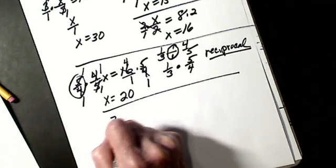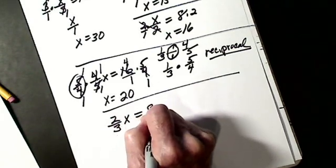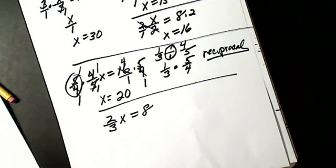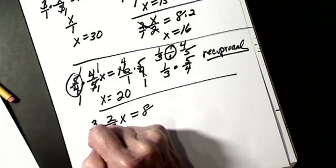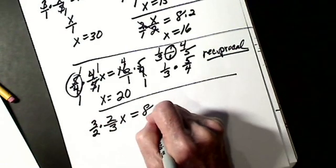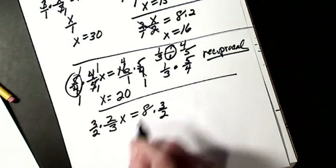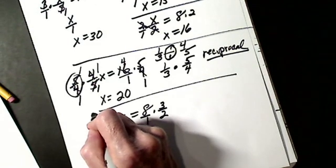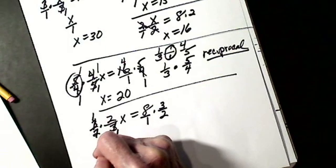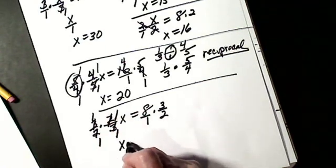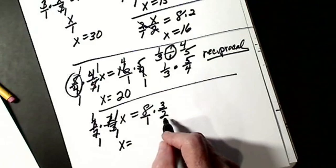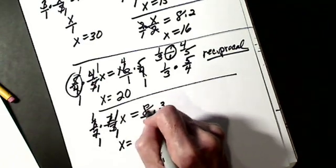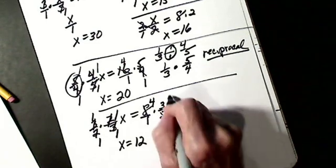Let's say I have 2 thirds x equals 8. To get rid of a fraction in an equation, I multiply by the reciprocal — it will take that fraction to 1. So I multiply this side by 3 halves, and I do the same to the other side. Any whole number, I put over 1. I cancel: 3 into 3 is 1, 2 into 2 is 1, leaving me with x. On the other side, 2 into 2 is 1 and 2 into 8 is 4, so 3 times 4 is 12. So x equals 12.